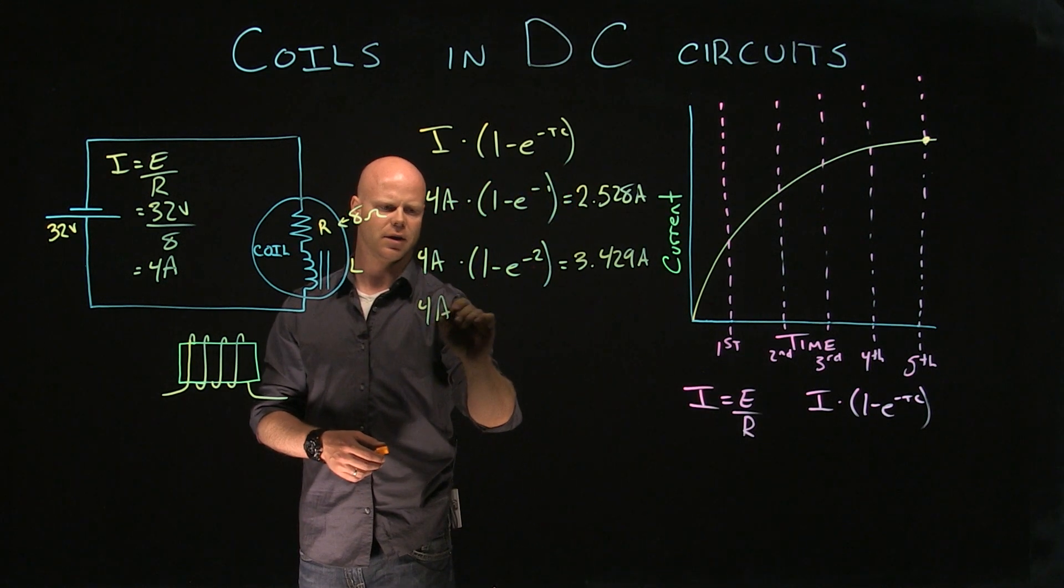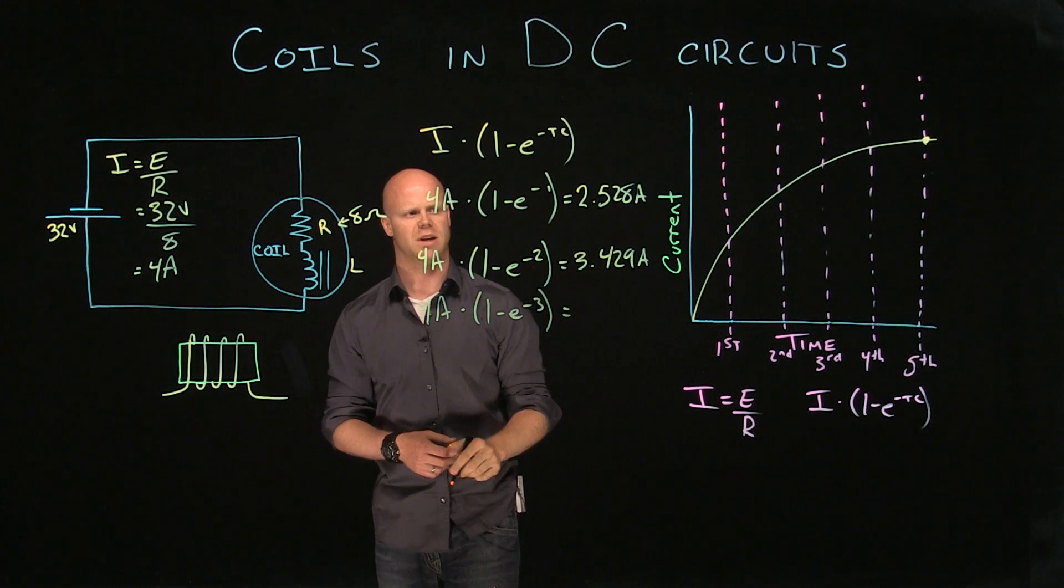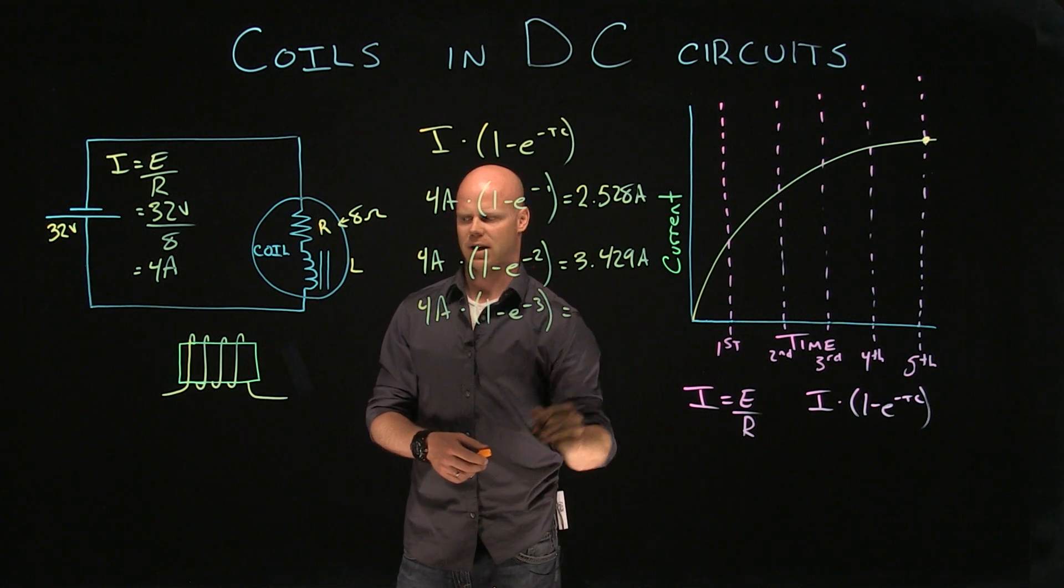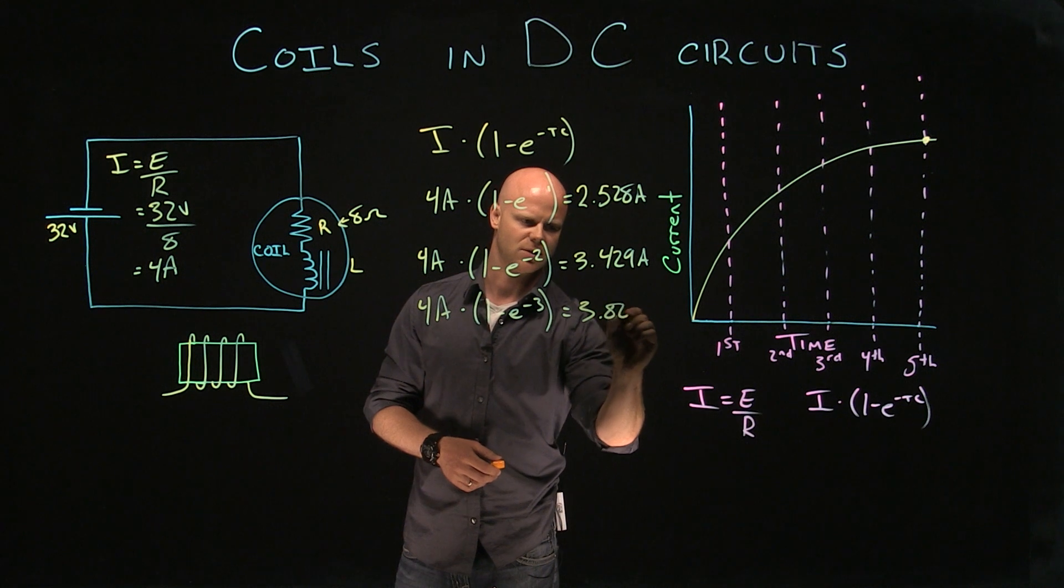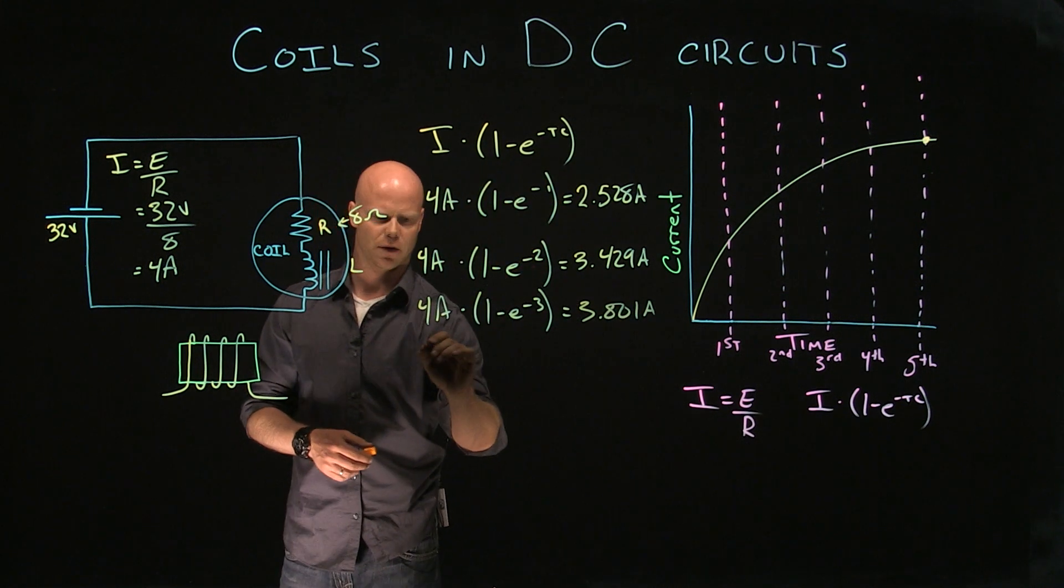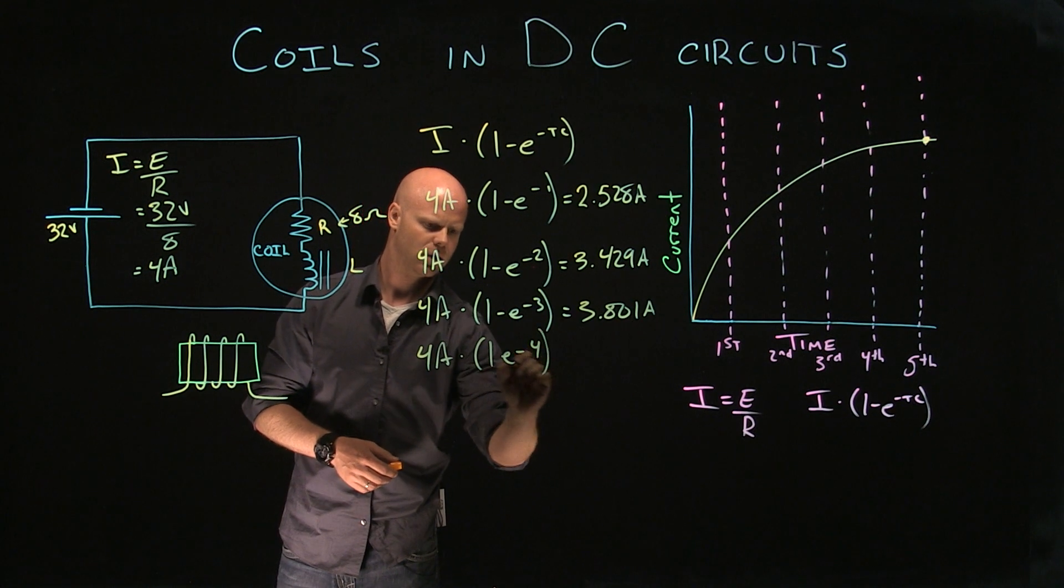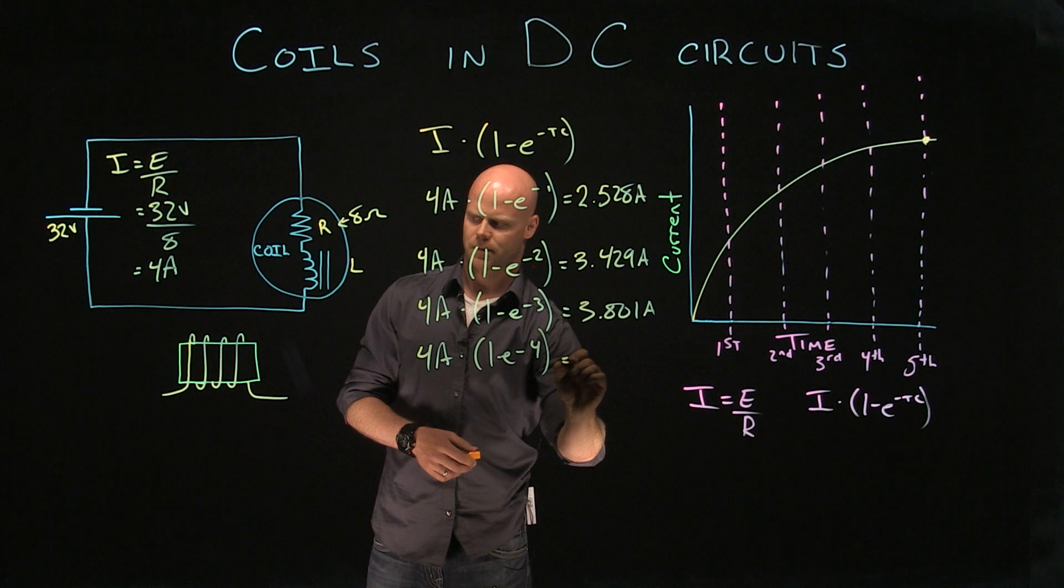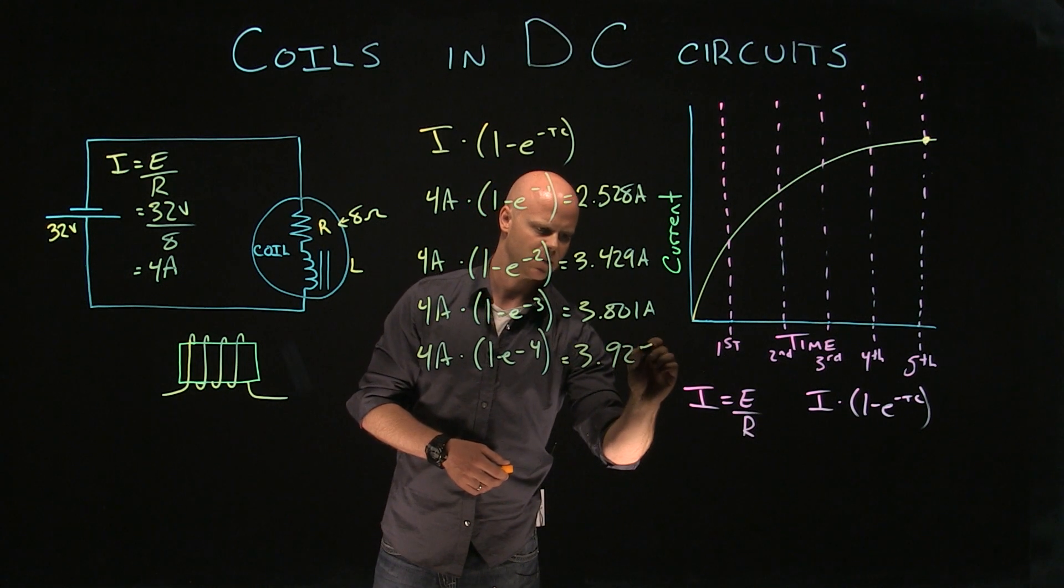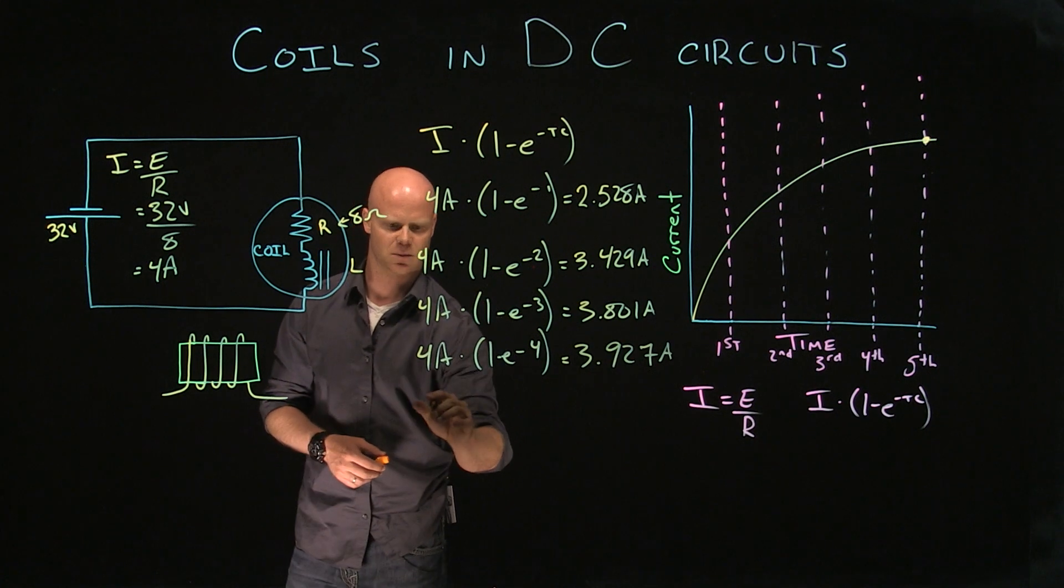Then the third. We should have another 63.2% increase from 3.429. We get 3.801 amps. At the fourth, we're going to have 3.927 amps. We're getting very close to that maximum value.